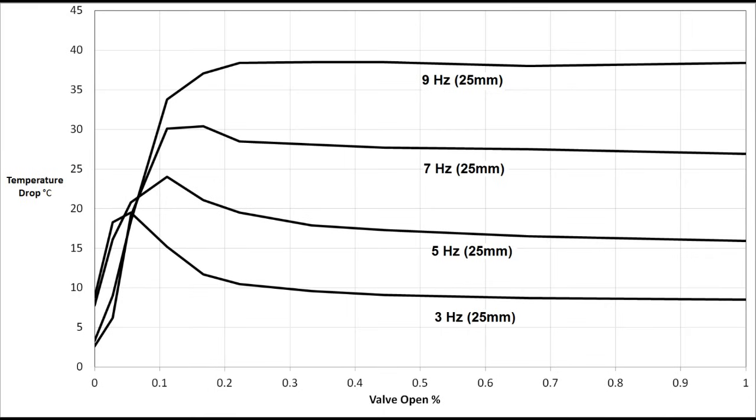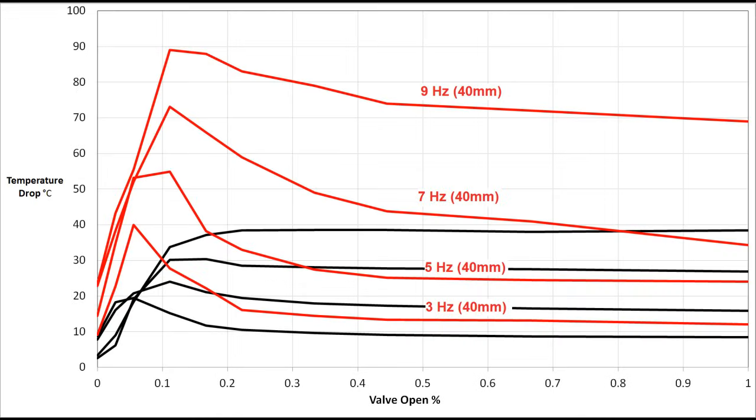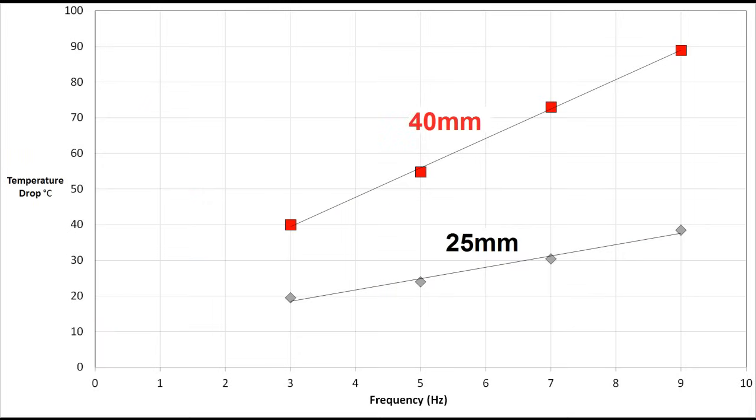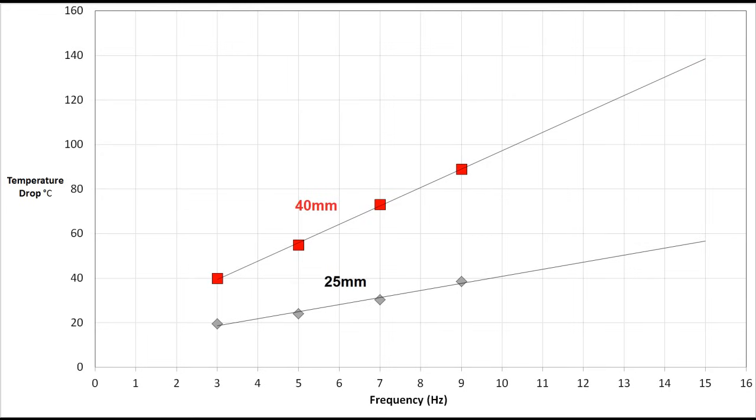Here's some graphs of temperature drop versus valve open percentage for 3, 5, 7, and 9 hertz on the 25 millimeter piston. And here's the results of the same test carried out on the 40 millimeter piston compared to the 25 millimeter. If we take the maximums and compare them as a function of frequency, we find that both pistons give a very nice linear trend up to 9 hertz, with the larger piston clearly being more effective than the smaller. By extrapolating the linear trend I'd expect a 140 degree temperature drop at 15 hertz, but the trend for the larger piston breaks down after 9 hertz.